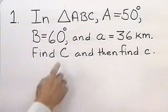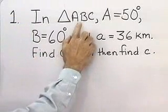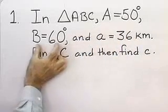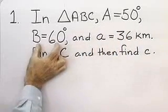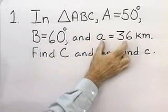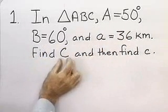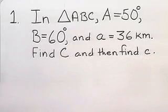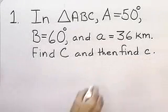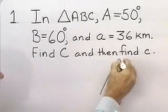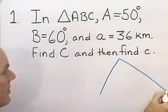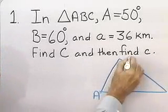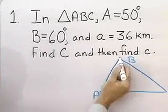We have triangle ABC, which is not necessarily a right triangle, in which angle A is 50 degrees, angle B is 60 degrees, and side A is 36 kilometers. We want to find the measure of angle C and then the measure of side C. I'm going to start this problem by drawing a triangle — it doesn't have to be very accurate. I'm just going to use it to label the information that I'm given. Here's angle A,